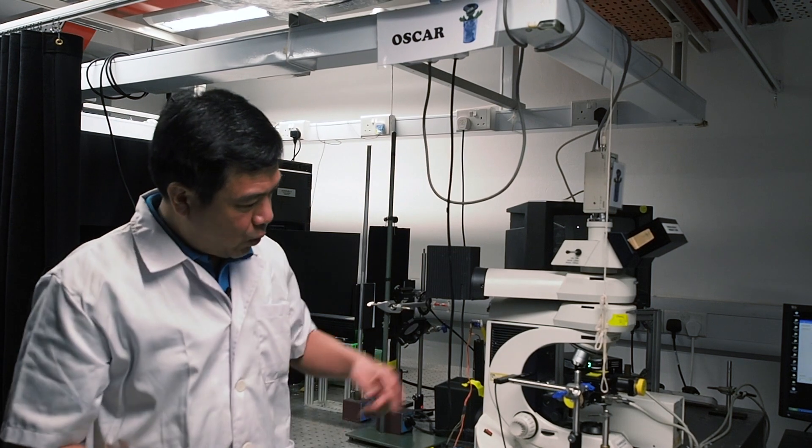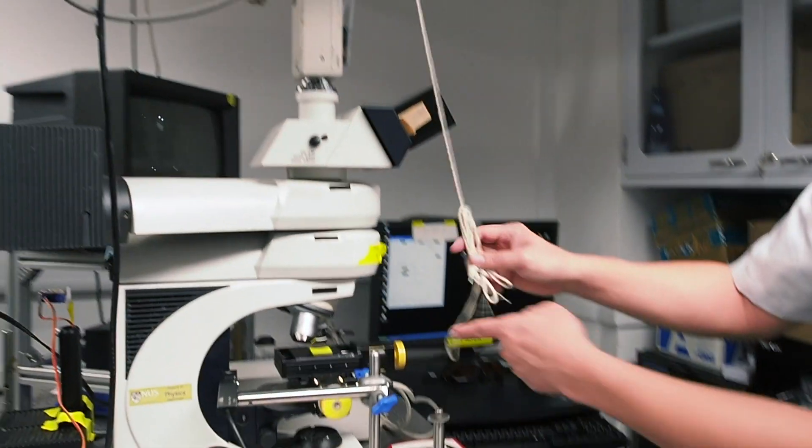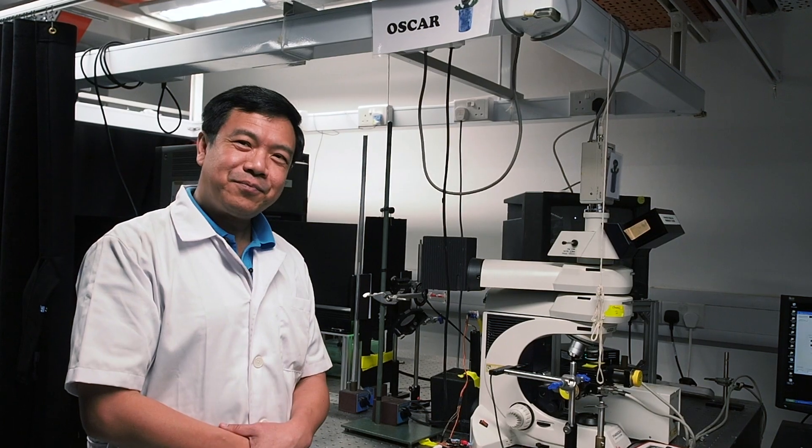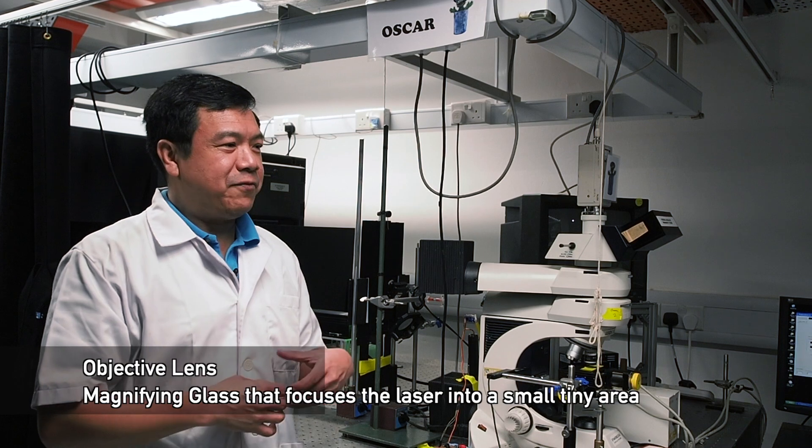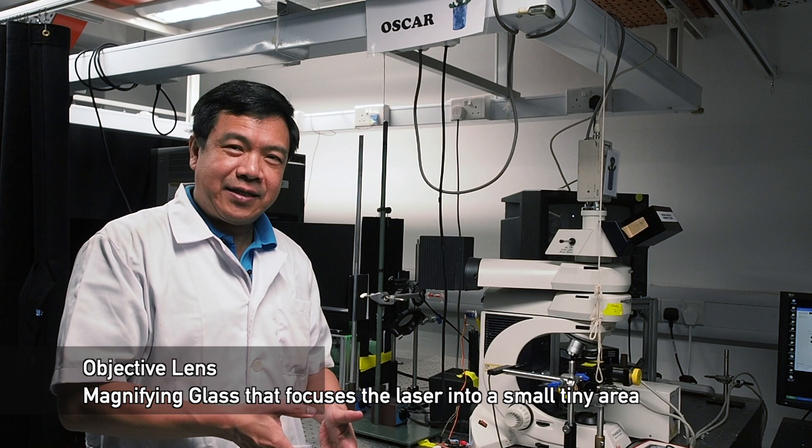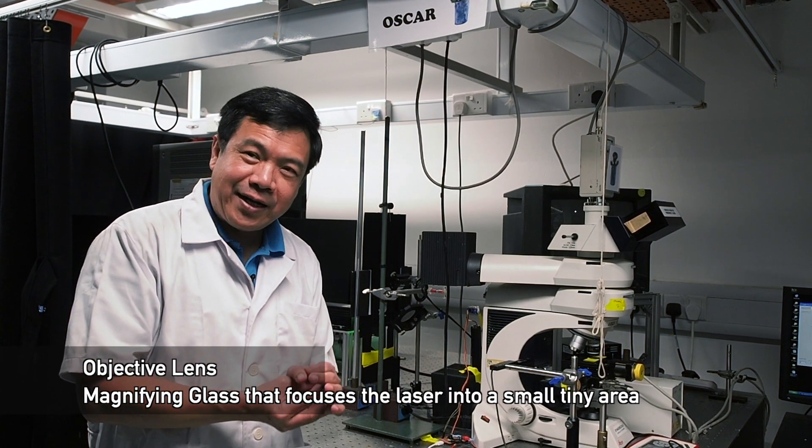The light goes towards the objective lens. What is the objective lens? It's like a magnifying glass - it's able to change the path of the laser light. In this case, it squeezes and focuses the laser beam towards a small tiny spot.